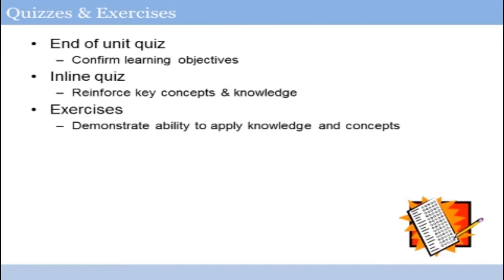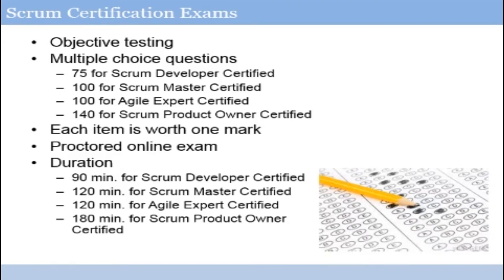One of the things that will help you understand your readiness for the certification exam is how comfortable you are answering quiz questions and your underlying knowledge of key concepts. There are a number of different Scrum certification exams available — they are objective, multiple-choice tests. The number of questions varies: 75 for the Scrum Developer Certified Exam up through 140 for the Scrum Product Owner Certified Exam. Each question is worth one mark with no guessing penalty, so take your best guess on every question. The exam is proctored online, and duration ranges from 90 minutes for Scrum Developer Certified, to 120 minutes for Scrum Master or Agile Expert, up through 180 minutes for the Scrum Product Owner Certified exam.